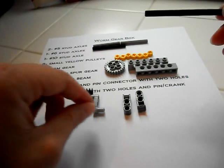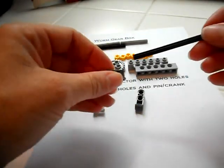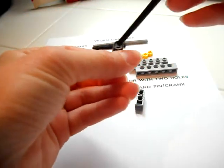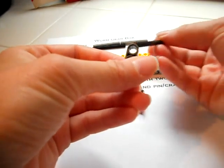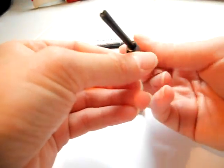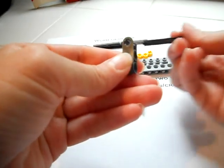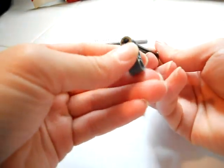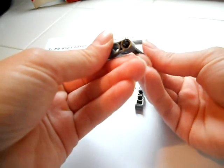Then we're going to take one of our axle and pin connectors, and we're going to put it through the open hole like this so it'll spin. If we put it through the other end, it'll be a snug fit and the axle won't spin. But if we put it through this end, it will spin.